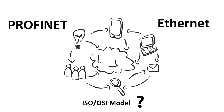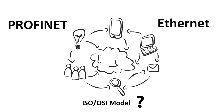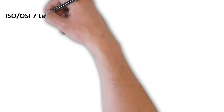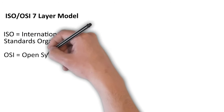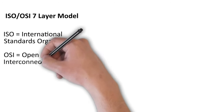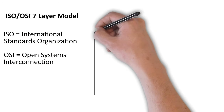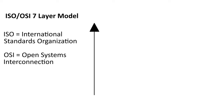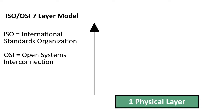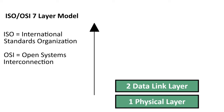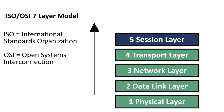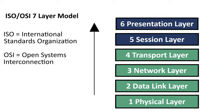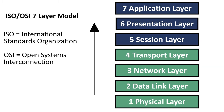What is the ISO-OSI model? It is a 7-layer model that generically describes the abstraction layers of a communication system. From bottom to top, the 7 layers of the model are: Physical, Data Link, Network, Transport, Session, Presentation, and Application.